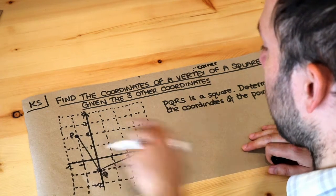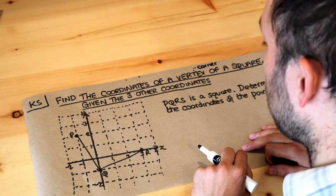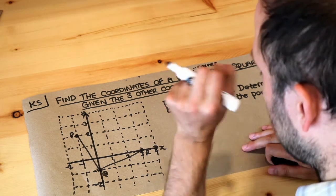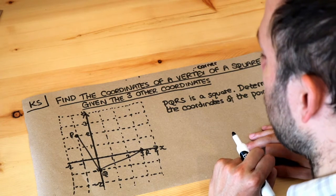So we're given three of the points of a square and we want to find the fourth point of that square and then find the coordinates, i.e. the position, of that fourth point of the square.